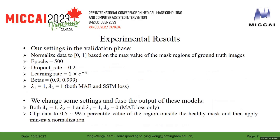For experimental results, our settings in the validation phase: we normalize data to the range between 0 and 1 based on the max value of the MOSC regions of ground truth images. We set epochs to 500, dropout rate to 0.2, learning rate to 1e-4, betas to the range between 0.9 and 0.999, and lambda-1 and lambda-2 both to 1 for MAE and SSIM. We change some settings and fuse the output of these models.